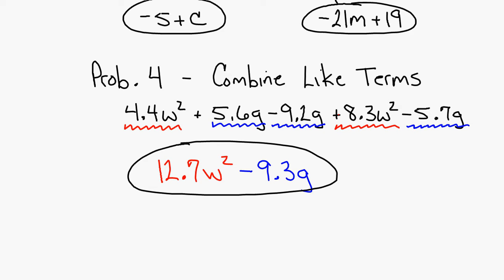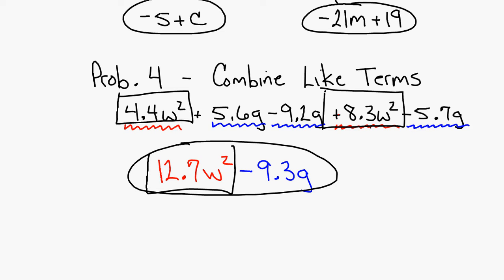Just identify the letters that are exactly the same. It's easier if you put a square around the W² terms and then add the two squares together. Similarly, circle the G terms and add everything inside the circles together. Either way works.